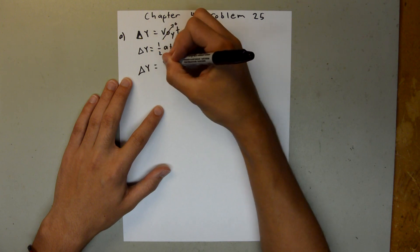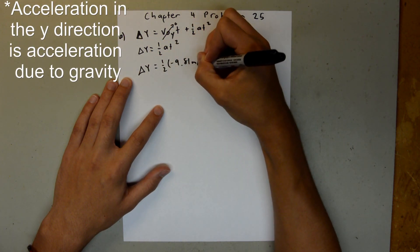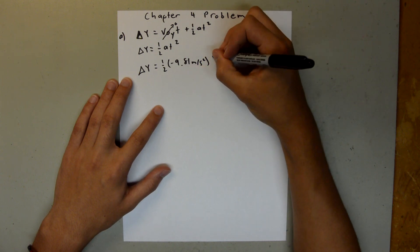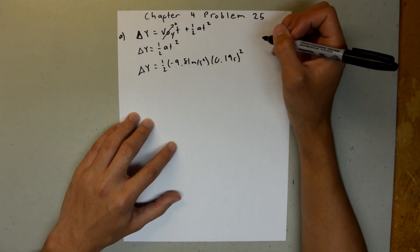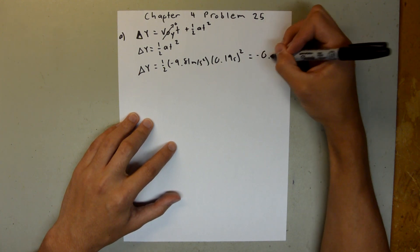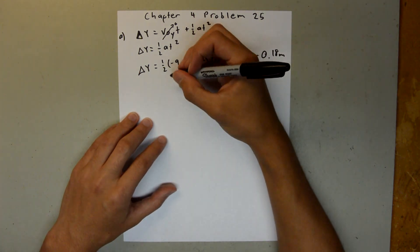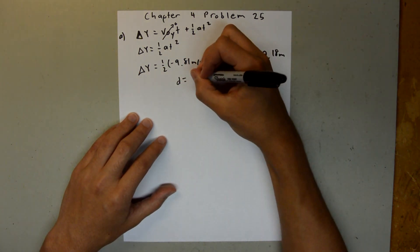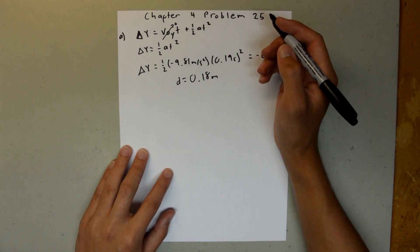So we can just plug them in. So this is one-half times negative 9.81 meters per second squared times 0.19 seconds squared, and when you plug that into your calculator, you should get negative 0.18 meters. And we're just asked for a distance, so we can just say the distance is equal to 0.18 meters.